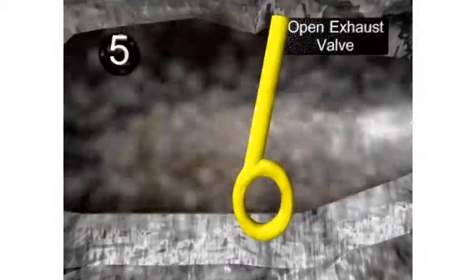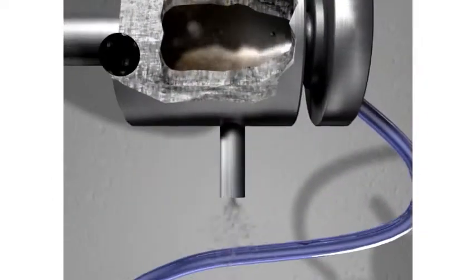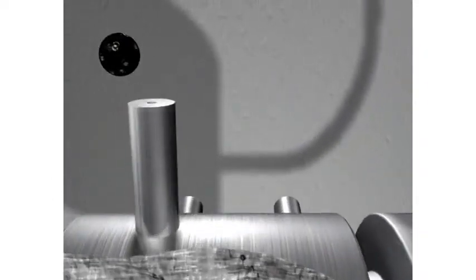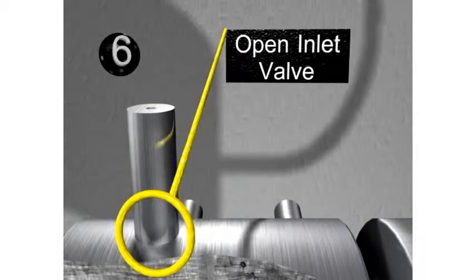The exhaust valve opens to release the contents of the combustion chamber. The chamber is then purged before beginning another injection.